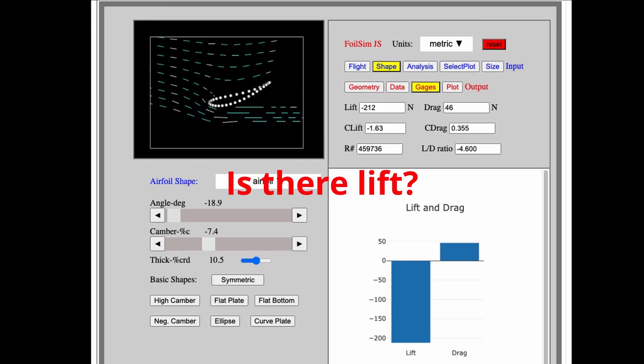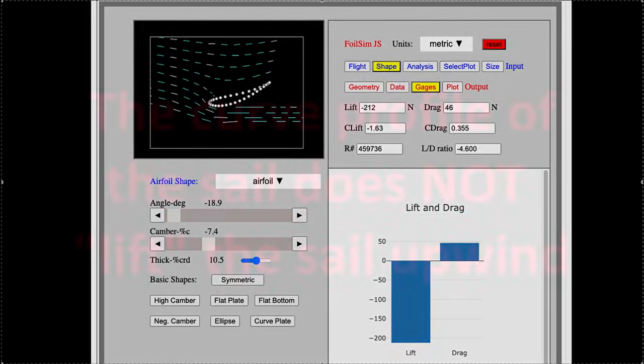So is there lift upwind? The answer is no. The curve profile of the sail does not lift it upwind; in fact, it pulls it down.